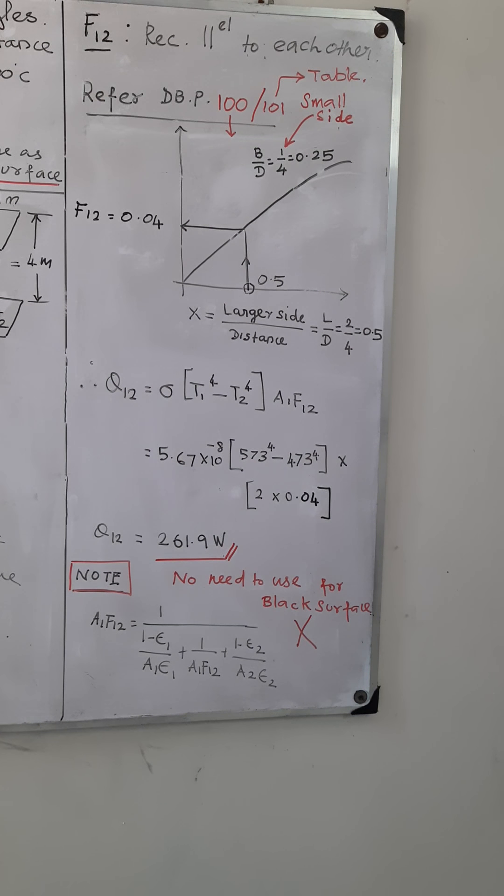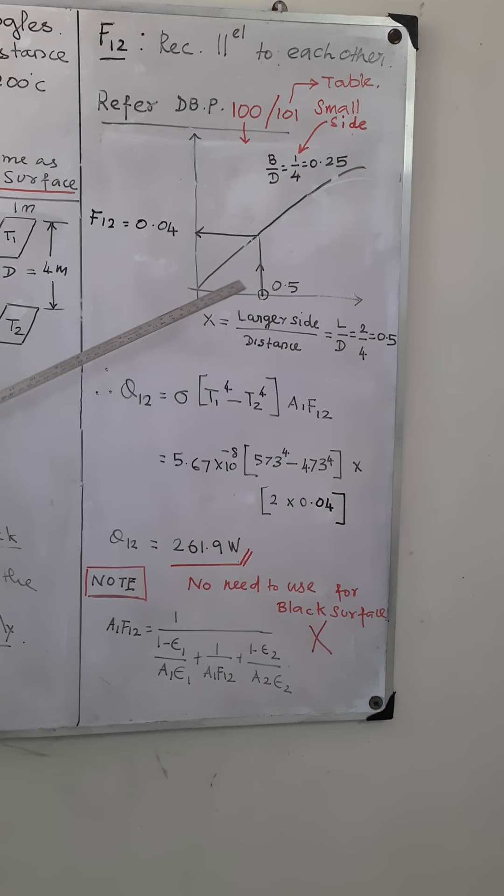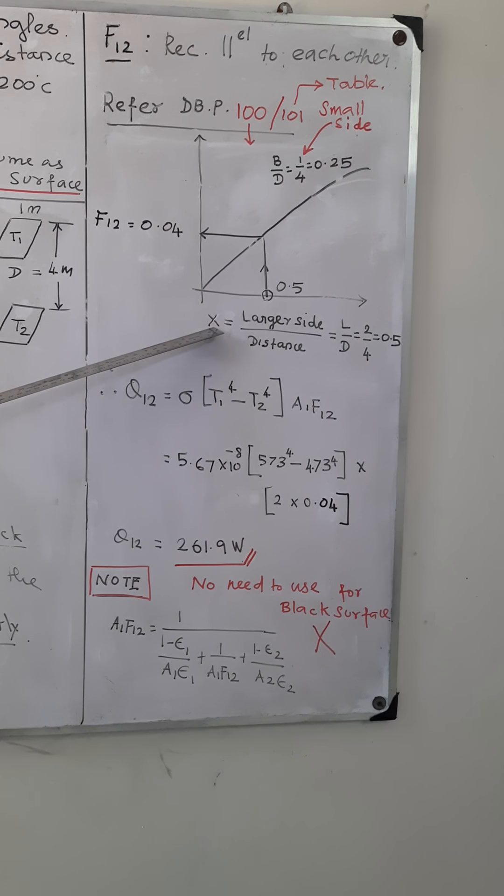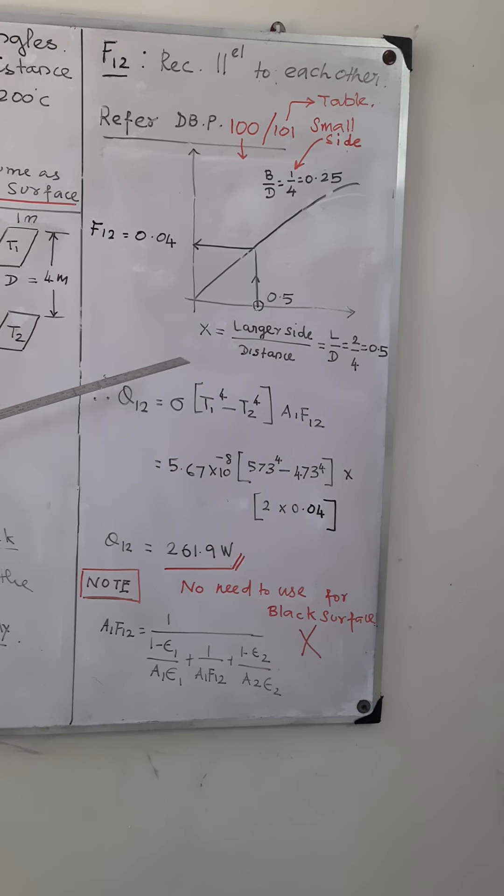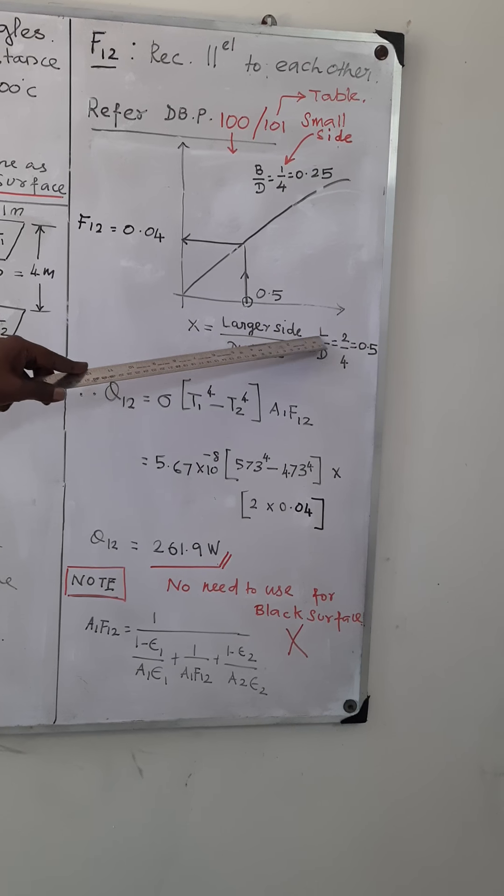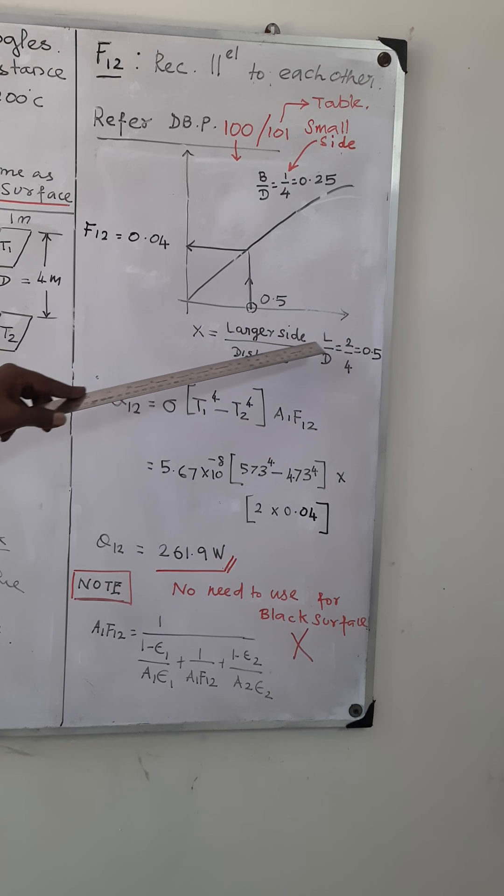For both cases we need two parameters: one is x-axis value, another one is curve value. The x-axis is represented as L/D. What is L/D here? L represents the larger side of the rectangle.